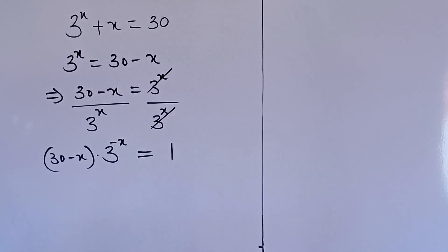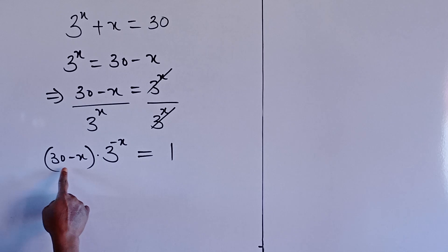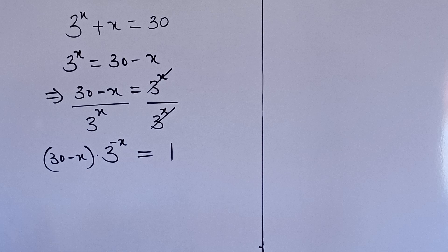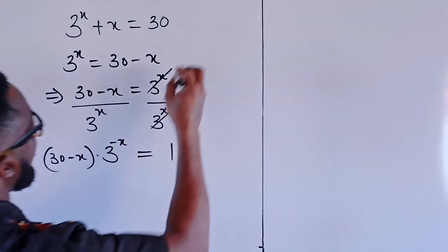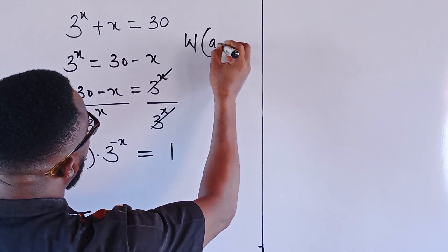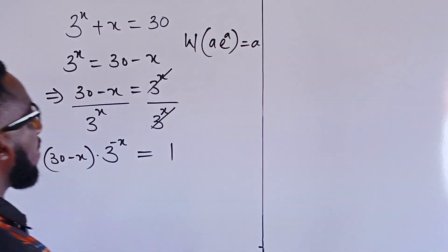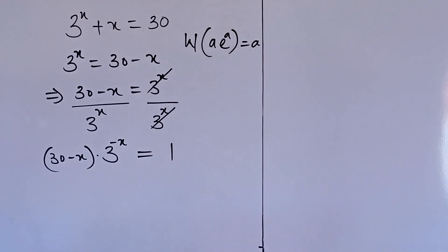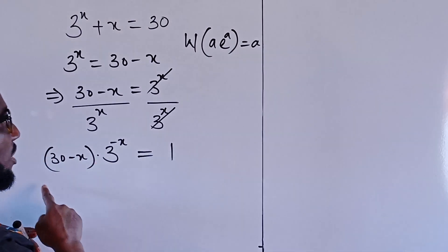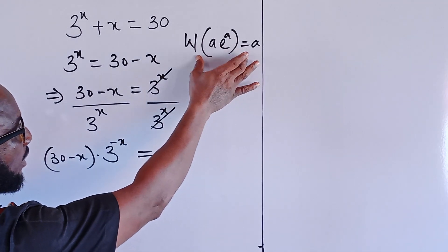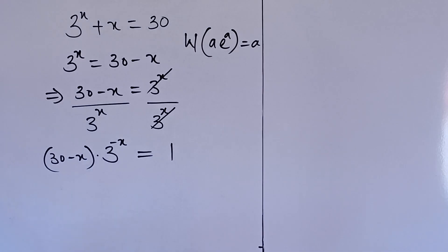The next thing is to make the coefficient — 30 minus x — the same as the exponent we have here. For the Lambert W function, w of a times e to the a is equal to a. Our target and objective is to write this equation, both the left-hand side and the right-hand side, to achieve this format before taking the Lambert W function, the product logarithm.